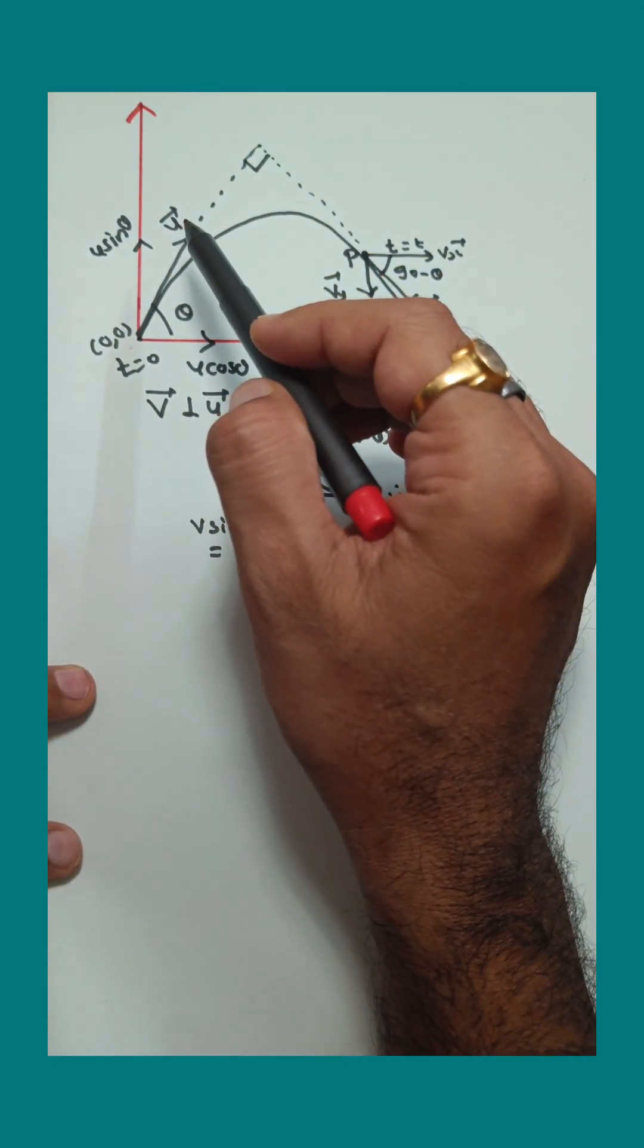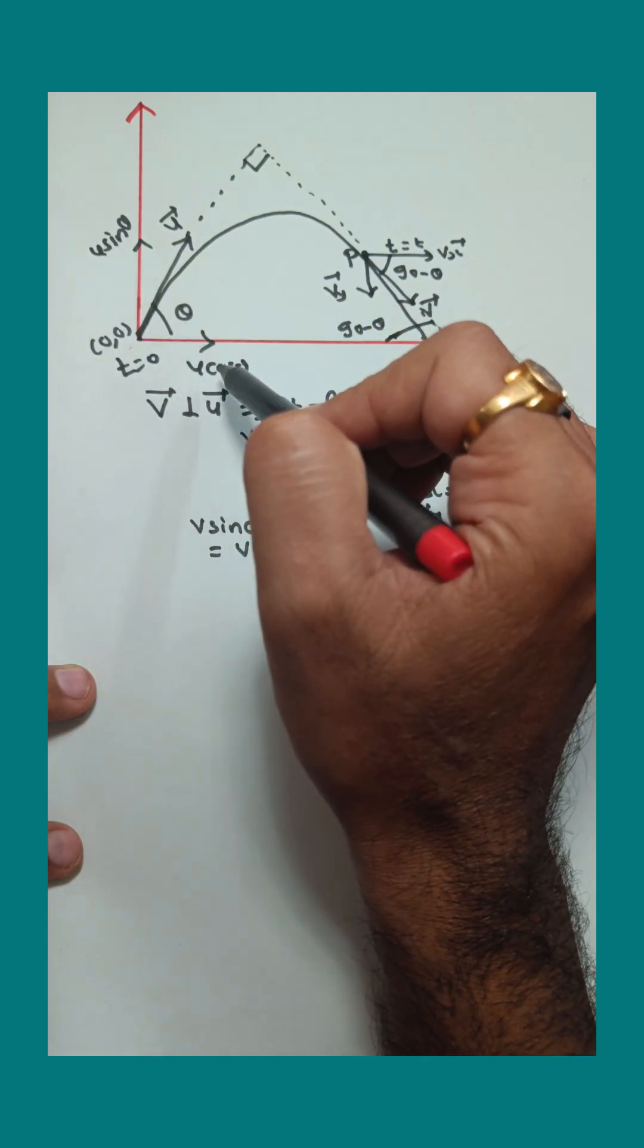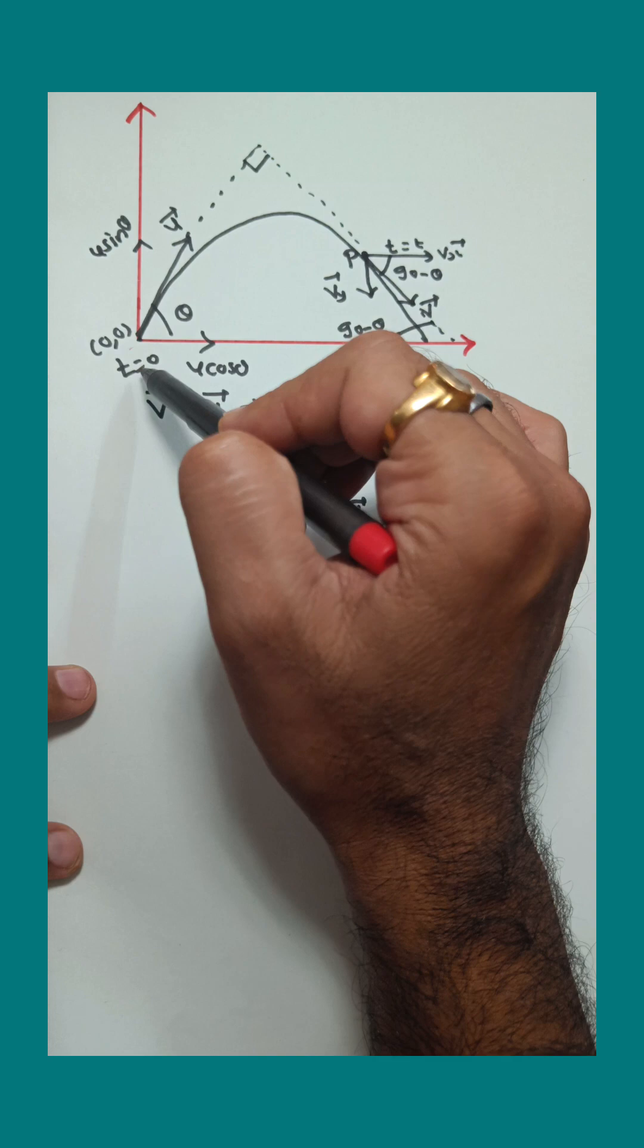In this diagram, u is the initial velocity of the projectile, theta is the angle of projection. There are two components of u: u cos theta and u sin theta. The initial coordinate of the projectile is 0,0, and the initial time is also 0.